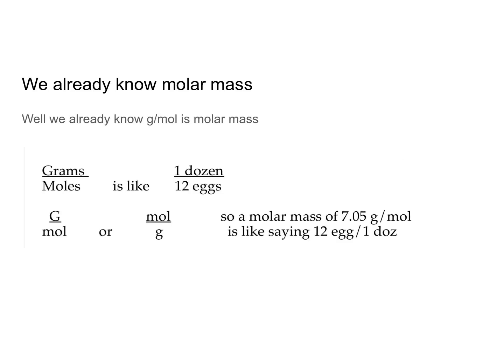We've already talked about molar mass — that is the mass of one mole of a substance. We worked through it and practiced, so you should know what that is. We know that the unit for this is grams per mole. So like for water, it is 18.02 grams per every one mole. That's a conversion factor, and you've used conversion factors your whole life and just didn't know it. You do it in your head so fast that you just don't even pay attention to it.